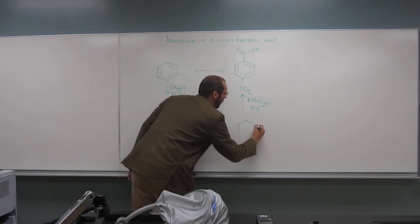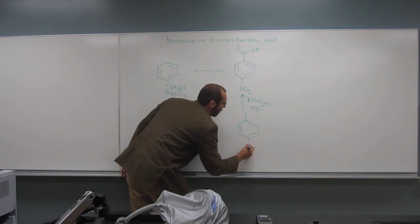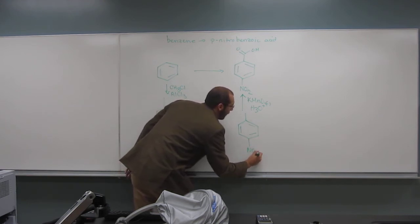Okay, and what would have been the starting material of that reaction there? The benzene ring with a methyl group. Okay, so a toluene, right? With a nitro group. Yeah, with a nitro group para to it, right?